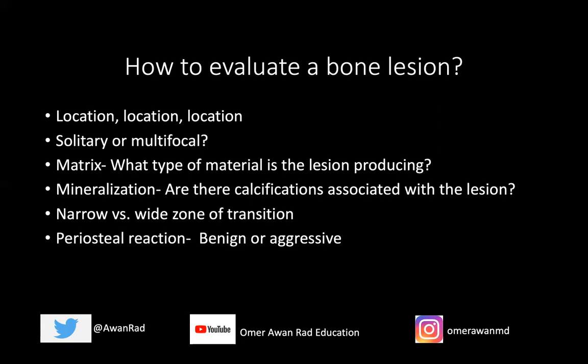Is there periosteal reaction? In our case there was not, but if present, is it benign or aggressive? Benign periosteal reaction is usually solid and well-defined. Aggressive types include sunburst periosteal reaction sometimes seen in Ewing sarcoma, or a Codman's triangle where the periosteum is lifting so fast that the bone doesn't have enough time to form normal periosteal new bone — often seen in osteosarcomas. Note that aggressive periosteal reaction can also occur in benign conditions like osteomyelitis.